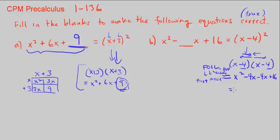Let's just combine like terms, and we have x squared minus 8x plus 16. And we see that if we make this an 8 right here, it makes this equality true, it's correct. So here for part A, we have 9, and for part B, we have 8.